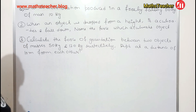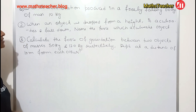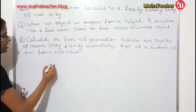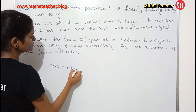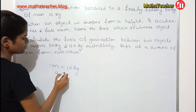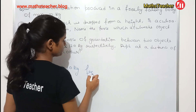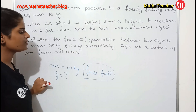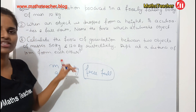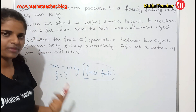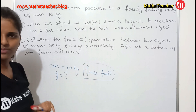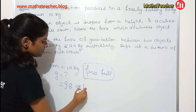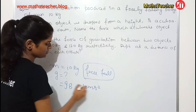Question number one: What is the acceleration produced in a freely falling body of mass 10 kg? There is a body with mass 10 kg and it is in free fall. The acceleration produced due to gravity does not depend on the mass. How much is it? It could be either 9.8 or 10 meter per second square. Choose from the options given. The answer is 9.8 or 10 m/s².